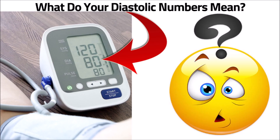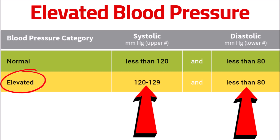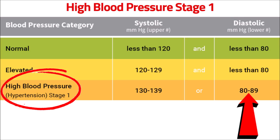So what do your diastolic numbers mean? If your diastolic number is less than 80 and the systolic number is less than 120, your blood pressure is normal. If your diastolic number is less than 80 and your systolic number is between 120 to 129, your blood pressure is elevated. If the diastolic number is between 80 and 89, your blood pressure is in the high blood pressure range — stage one — regardless of what your systolic number is.